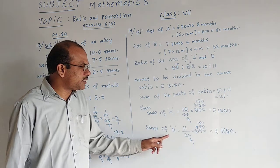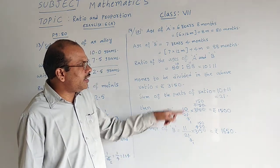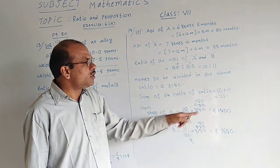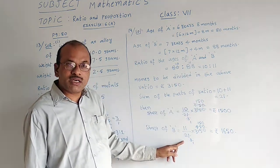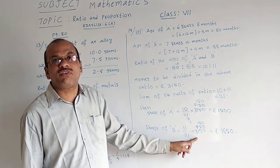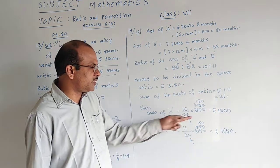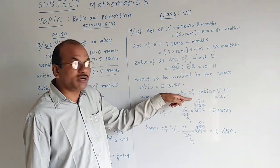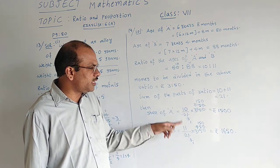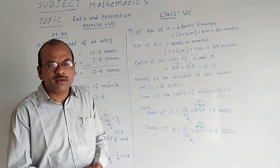Then share of the second person B is equal to 11. So 11 by total parts are 21 into the total money is 3,150 rupees. Now 7th table as we have done previously. When we cancel we got 150 there. Here also 150 because 21 only denominator in both the cases. So calculation is same only.